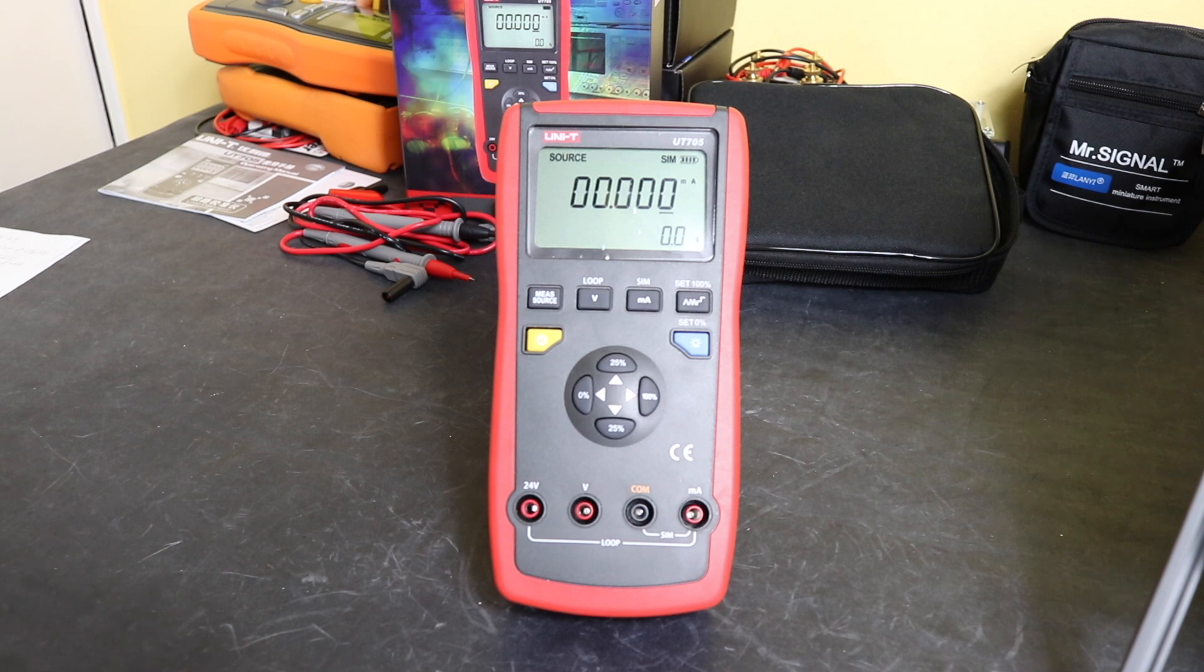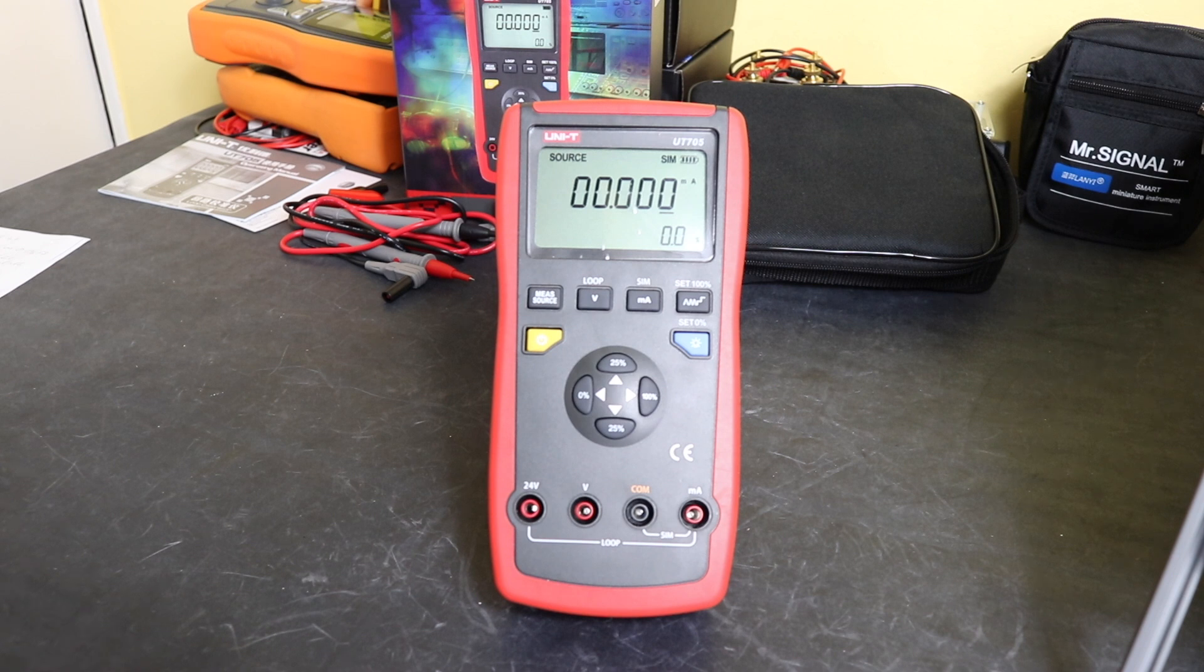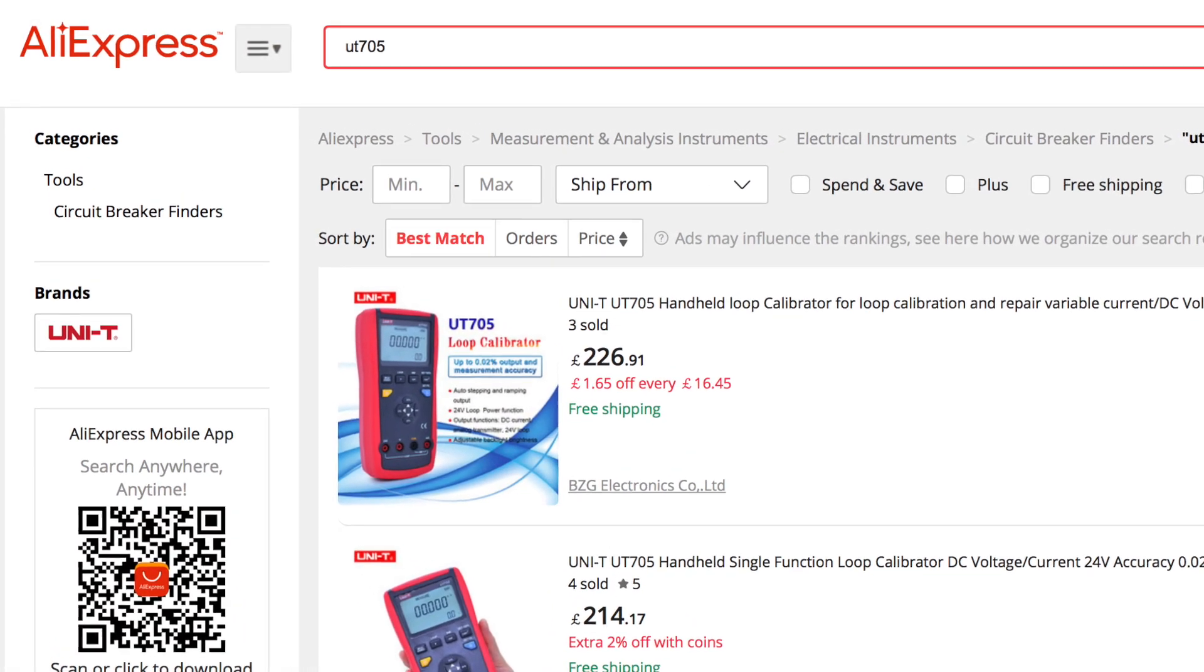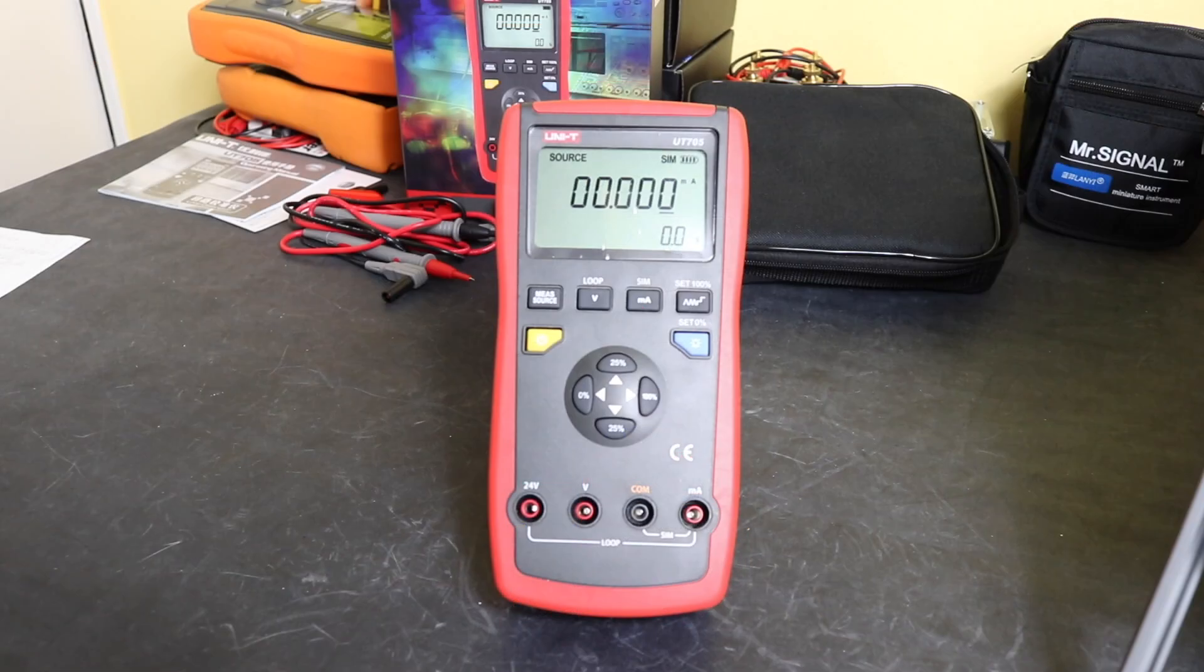In terms of accuracy for both the voltage and current functions, it is 0.02 percent plus two digits. That's actually more accurate than any of the other instruments that I've looked at so far. Price-wise, this unit is much cheaper to purchase from China. So when I purchased this it was around about 260 pounds delivered. From Amazon within the UK this would cost you 379 pounds at the moment, so there's quite a significant saving to go and purchase it direct from China if you do want something like this.